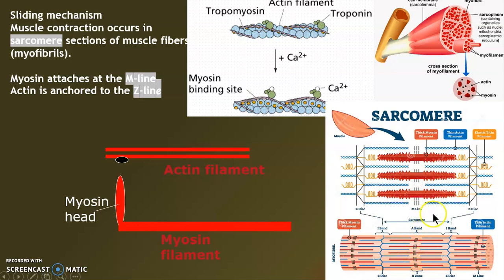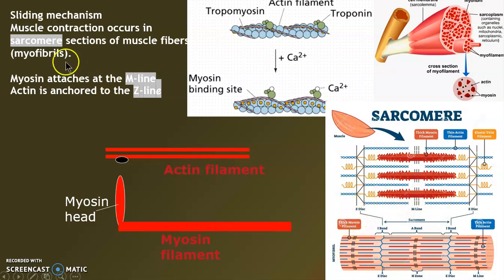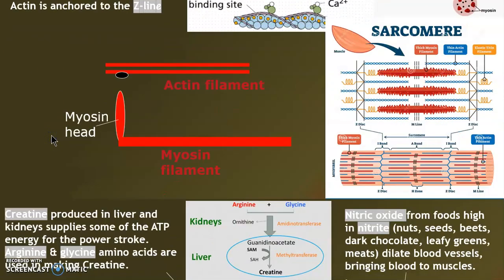At least striated muscle looks that way. So most of this is review: M line for myosin, Z line for actin. These two filaments slide past each other within a functional unit called a sarcomere. The prefix sarco refers to muscle.